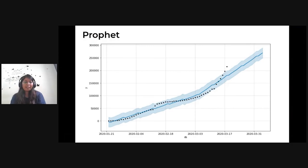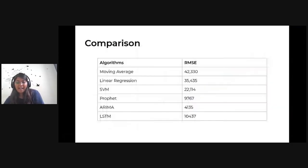So now, we will compare all the algorithms. So moving average performed, RMSE is 42,000, linear regression 35,000, support vector machine performed better 22,000, Prophet 9,000, ARIMA 4000 and LSTM 10,000. So clearly the winner on this dataset is ARIMA and thank you.